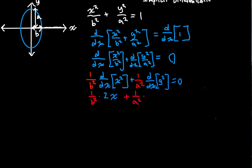And then we're adding 1 over A squared times the derivative with respect to X of Y squared. We use the chain rule for this. We say, hey, there's kind of an outer function here, X squared.